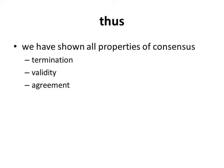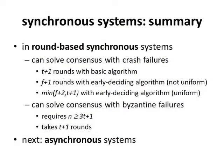In conclusion: for synchronous round-based systems, we can solve consensus with crash failures in t plus 1 rounds. We can solve consensus with Byzantine failures provided fewer than n over 3 processes are Byzantine. This requirement is necessary — if a third or more processes are Byzantine, consensus cannot be solved. The algorithm also requires exactly t plus 1 rounds.